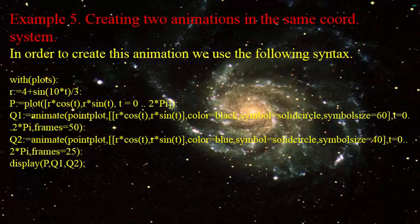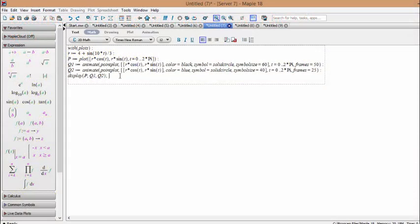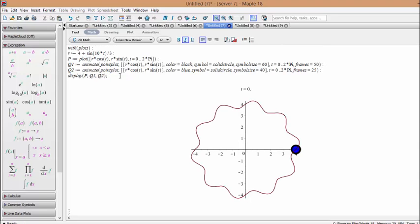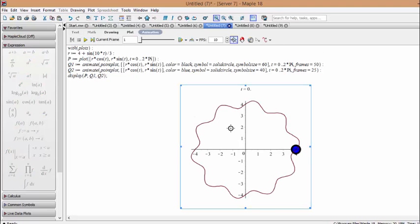Example 5: Creating two animations in the same coordinate system. In order to create this animation we use the following syntax. By copying and pasting the commands here we can get the following plots. By clicking on each plot we can activate the tools for animating the plot.